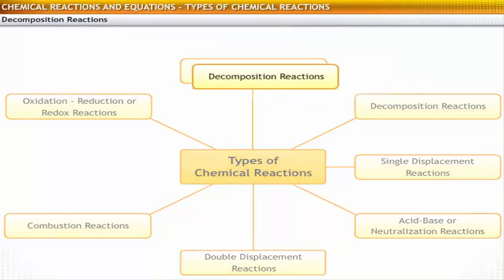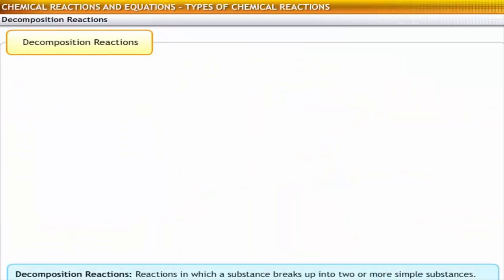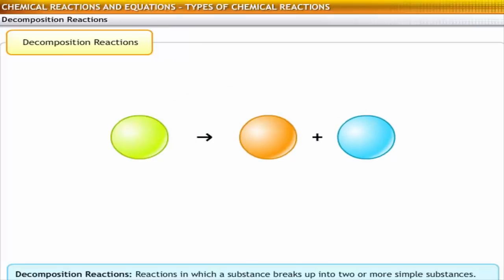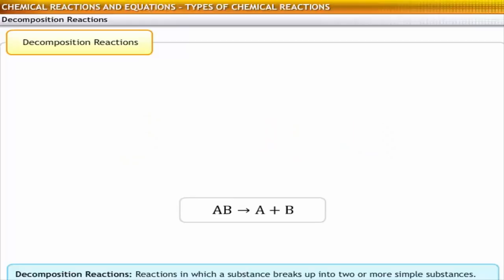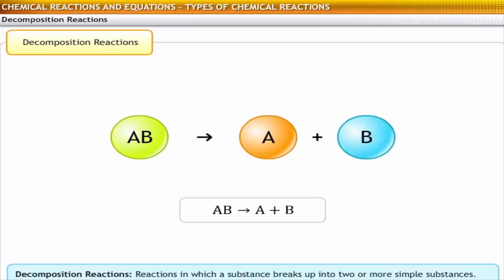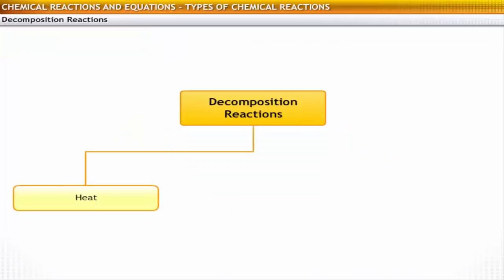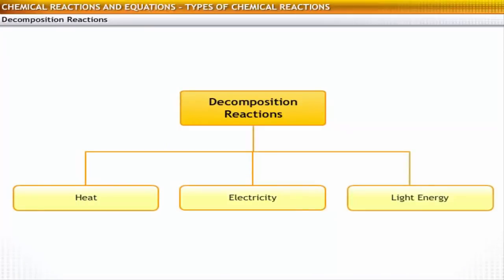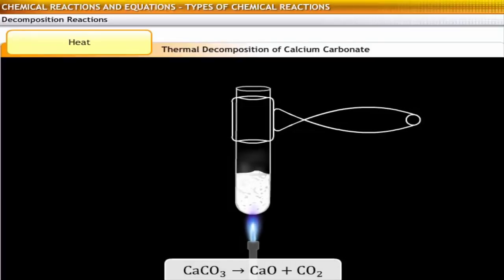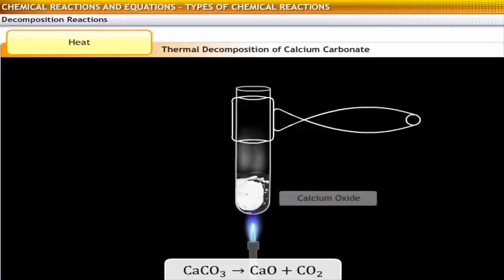Decomposition reactions are the opposite of combination reactions. Decomposition reactions are those in which a substance splits into two or more simpler substances. The general form of a decomposition reaction is: AB decomposes to give A and B. Decomposition reactions use heat, electricity, or light energy. Decomposition through the action of heat on a substance is called thermal decomposition. For example, calcium carbonate on thermal decomposition gives calcium oxide or quick lime and carbon dioxide.